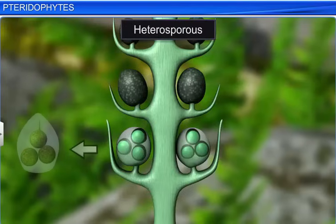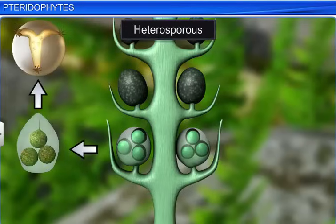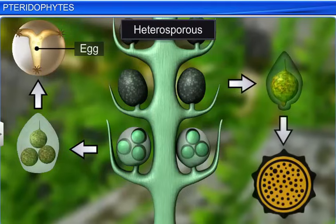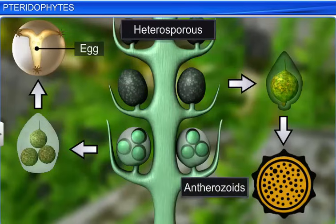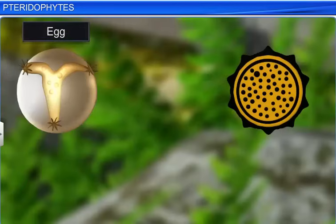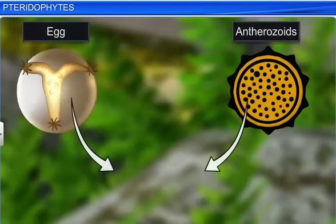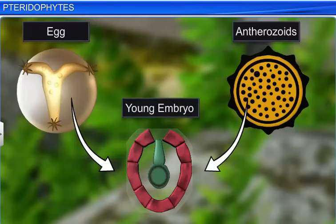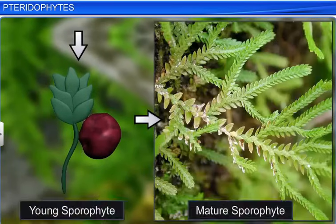Megaspores germinate into female gametophytes, which produce eggs, while microspores germinate into male gametophytes, which produce anthrozoids. The egg and anthrozoid fuse to form a zygote, which develops into a young embryo, which then gives rise to a sporophyte.